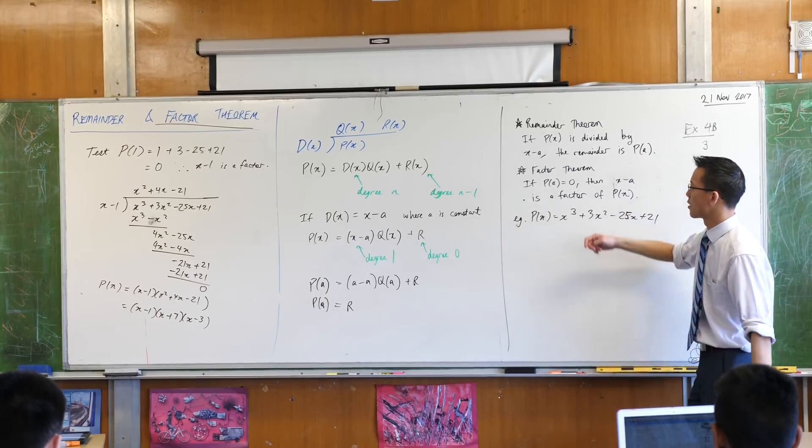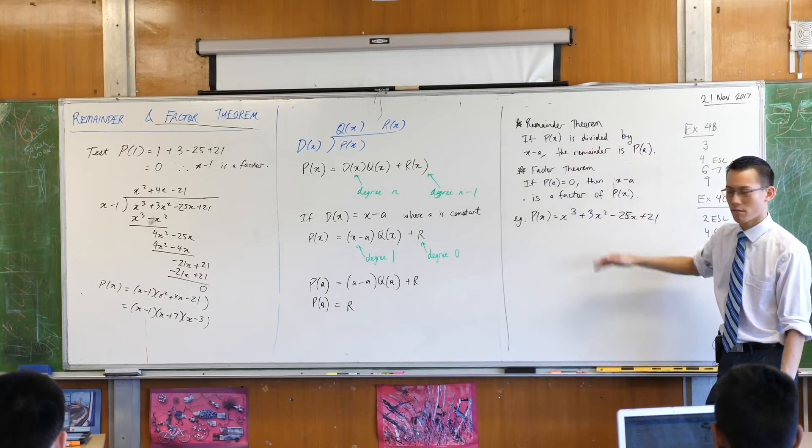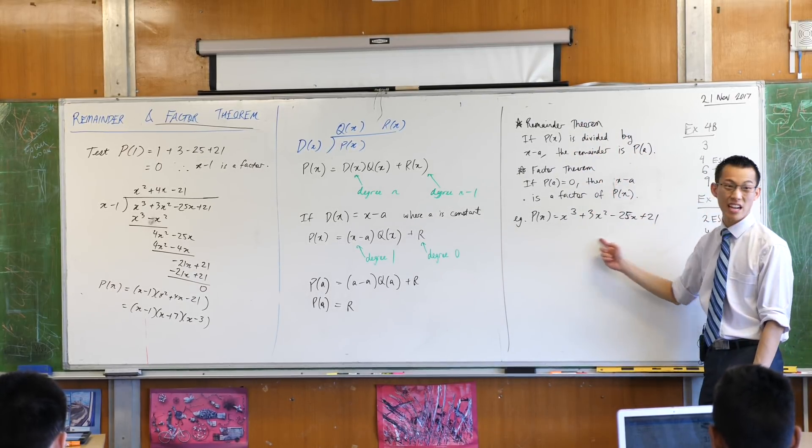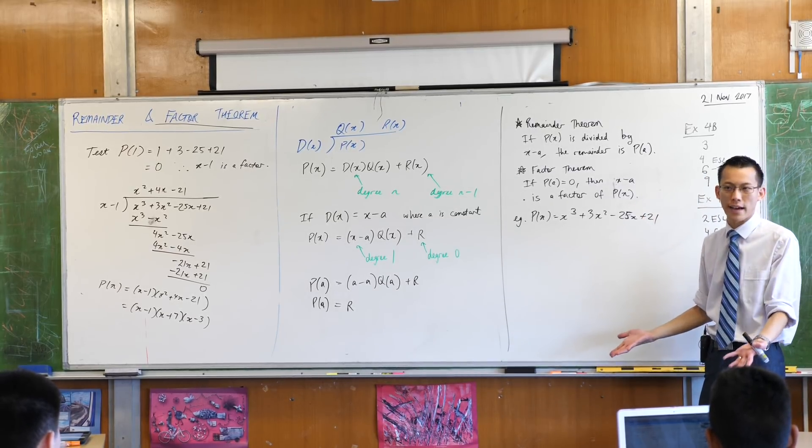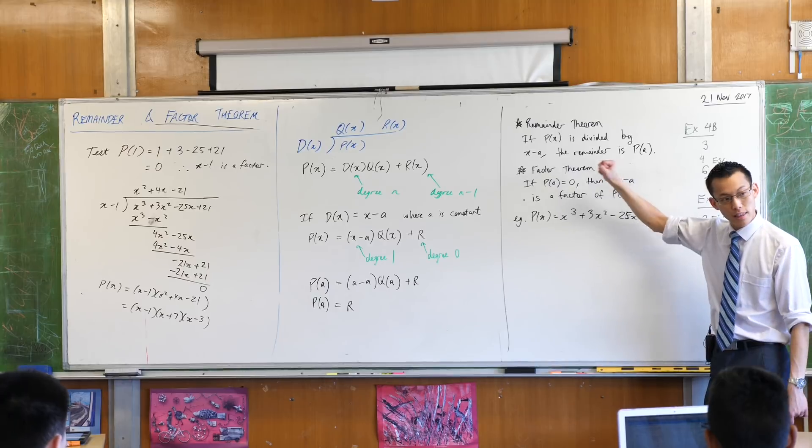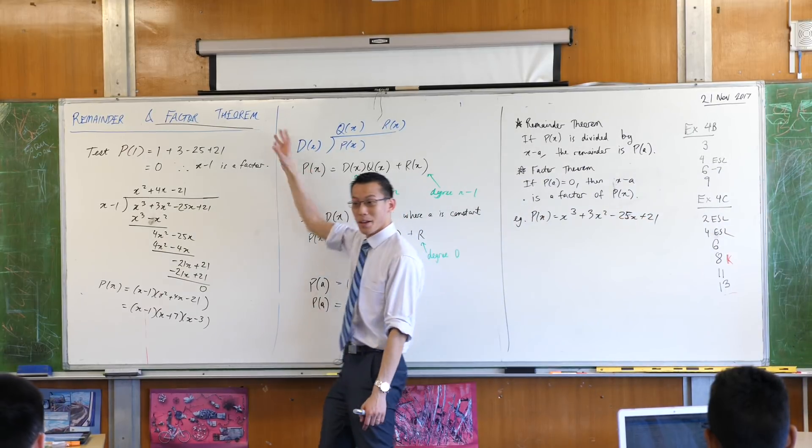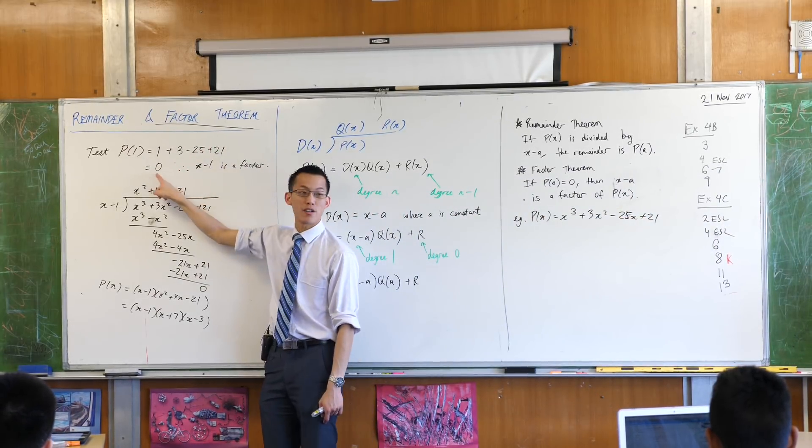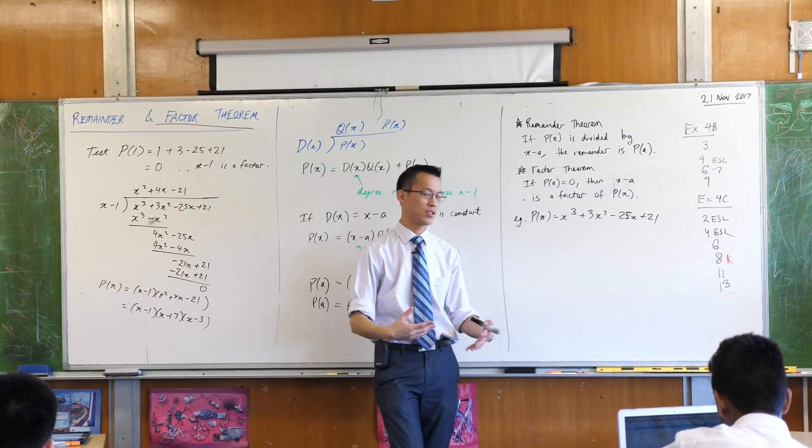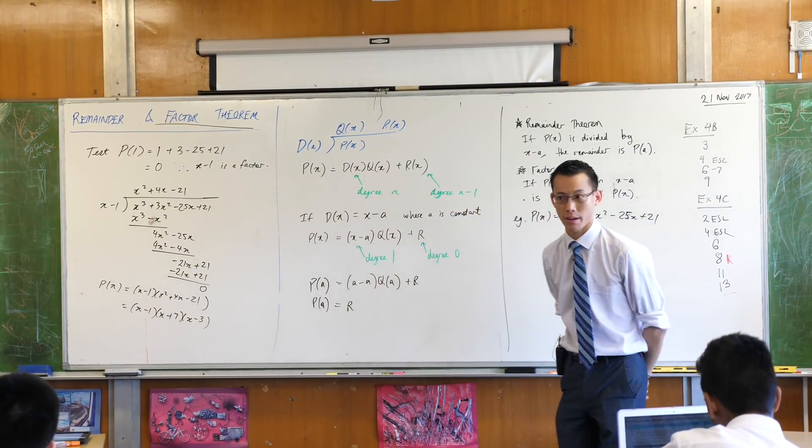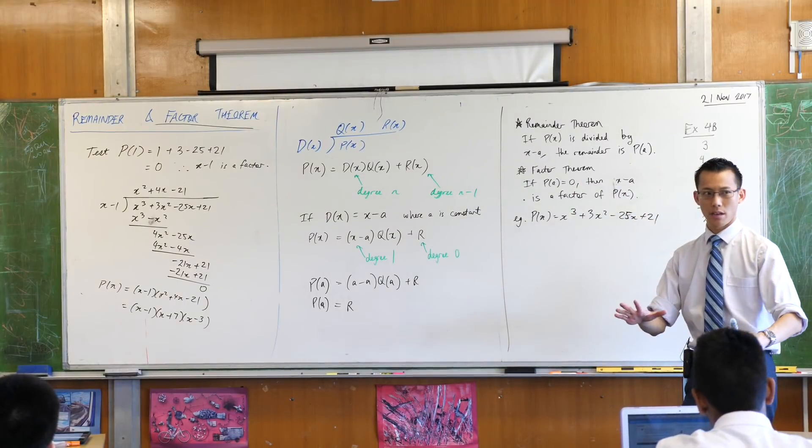So, just to quickly review. Why did we establish all of this theory? It's basically so that we can start tackling these. Because before, if it wasn't a quadratic, you were stuffed. Like you can't factorize. But the factor theorem tells you, throw some numbers at that thing until you find a remainder of 0. Once you do that, off you go and you'll reduce it to a question you can handle. Any questions?